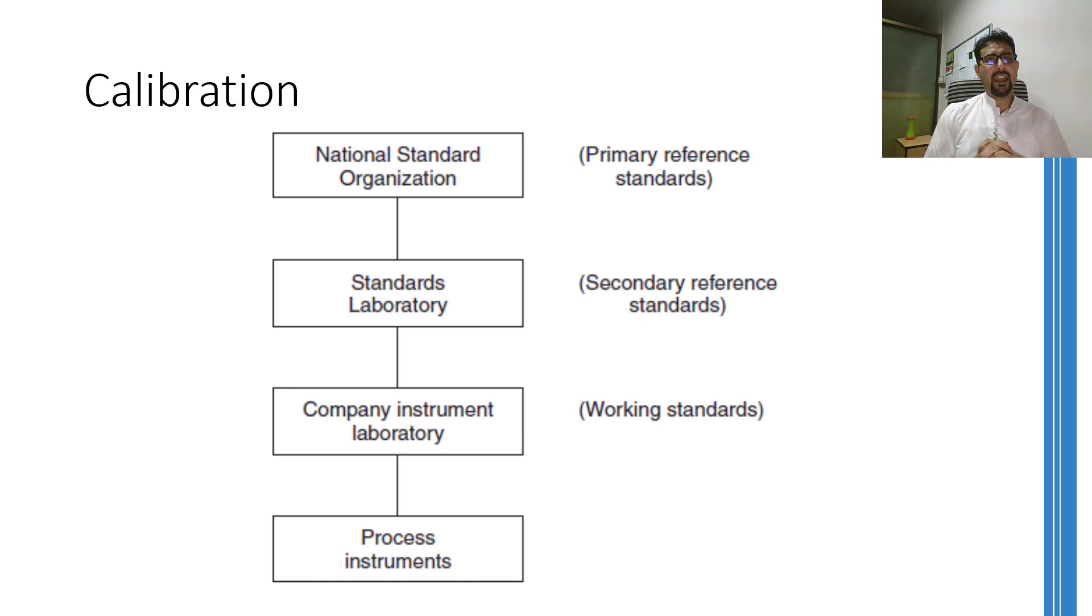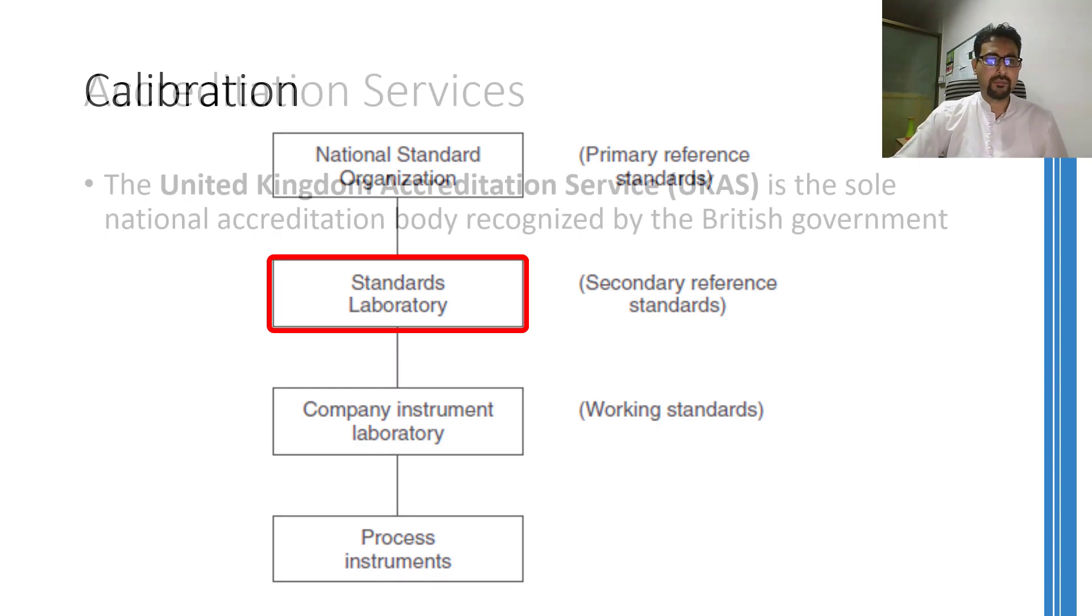This flow graph shows the levels that are used for establishing calibration standards. At the bottom, there are process instruments or the instruments that are used on the factory floor. If they need some kind of adjustment or calibration, they must be compared with the working standards which have been established by the company through their calibration laboratory. This calibration laboratory, which is operating inside any industry, must be in constant contact with the standard laboratories around the country. These standard laboratories are accredited laboratories from the national level organization of any country. So for any country, a national standard organization will define the standards that will be followed by standard laboratories. And if any industry needs any kind of help for calibration or about any standard, the standards laboratory must be contacted.